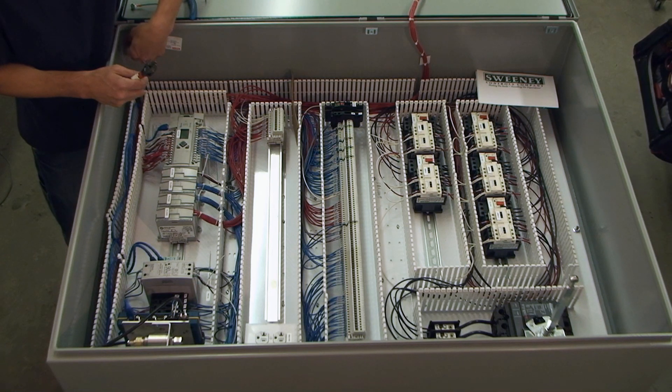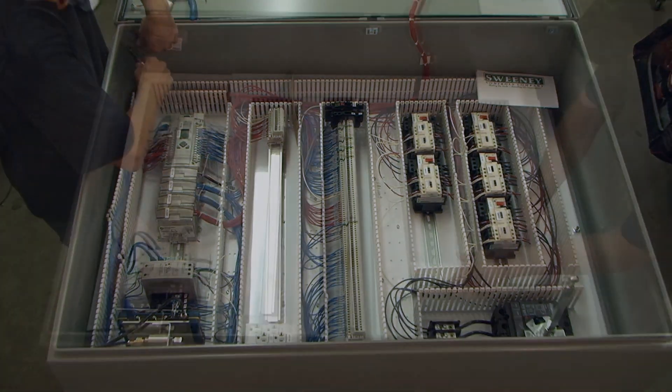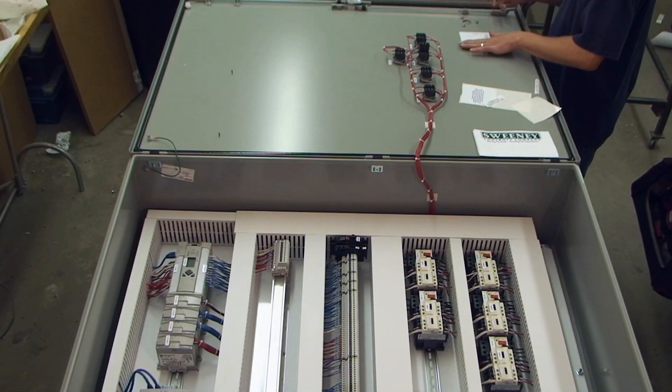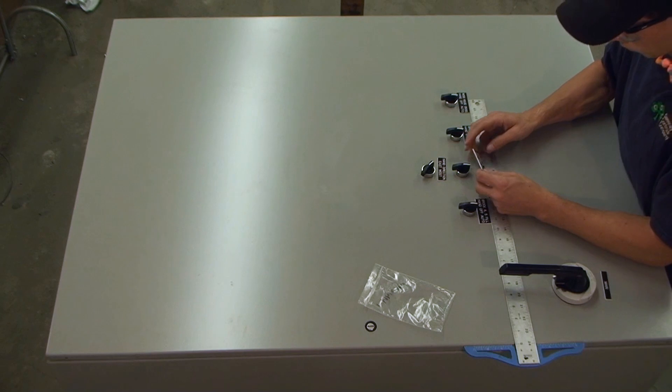After all components are installed and wiring is complete, labels are installed, like serial tag, fuse identification, field wiring, torque, and more.